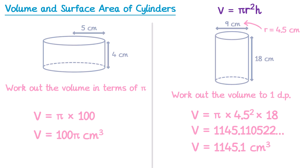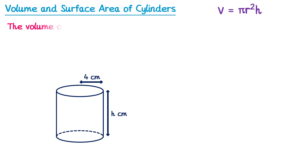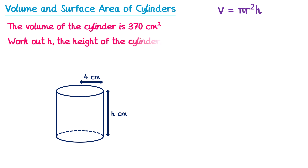Now let's take a look at a more difficult question involving the volume of a cylinder. If we take this cylinder, the question tells us that the volume of the cylinder is 370 centimeters cubed. This is different because they've told us the volume rather than asking us to work it out. Then we're told to work out h, the height of the cylinder, and we need to give the answer to one decimal place. So this question requires us to work backwards to find the height.